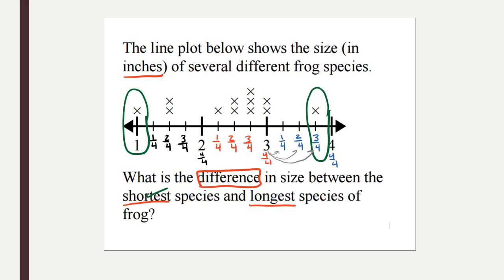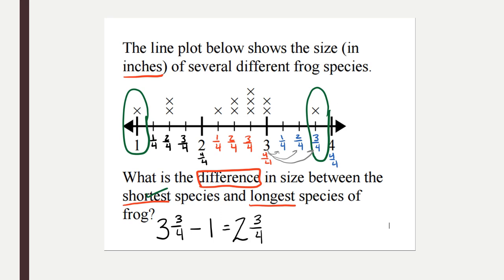Now I can set up my problem. I know I have to find the difference so I'm subtracting, and I need to use the bigger number first: three and three fourths minus one. I'm going to subtract my fractions first — the whole number one doesn't have a fraction, so that's like zero. Three fourths minus zero is still three fourths. Now subtracting the whole numbers: three minus one is two. So the difference in size between the shortest species and the longest species of frog is two and three fourths inches.